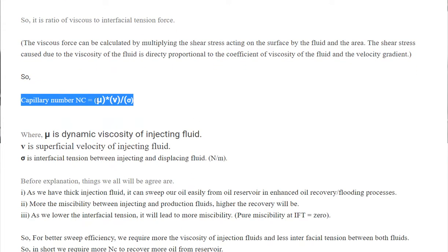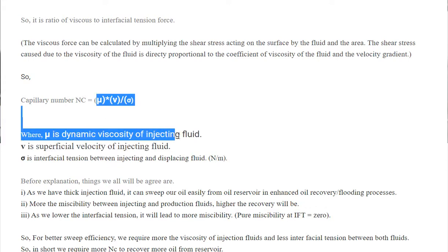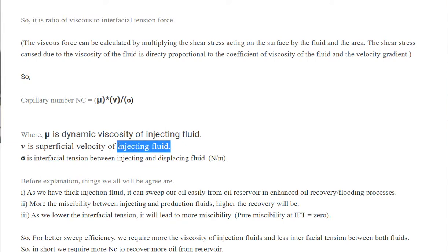The important terms to notice are μ and v. Mu is the dynamic viscosity of the injecting fluid — that is the fluid which we inject during our EOR process. In EOR, we have two types of fluid: injection fluid and reservoir fluid. Mu is related to the injecting fluid, and v is the superficial velocity of the injecting fluid. It is very important to know that these terms are of the injecting fluid, not the reservoir fluid.